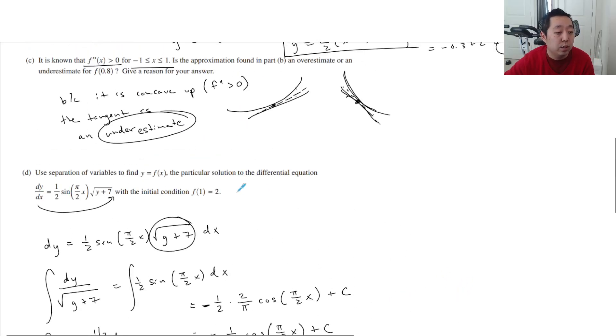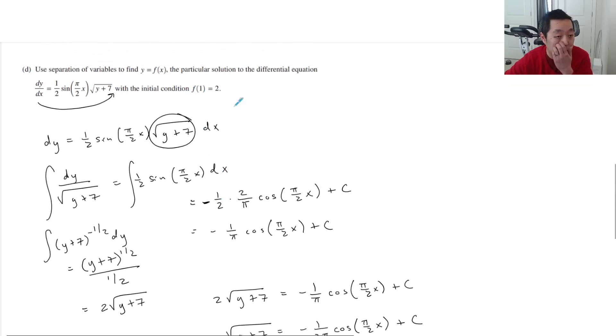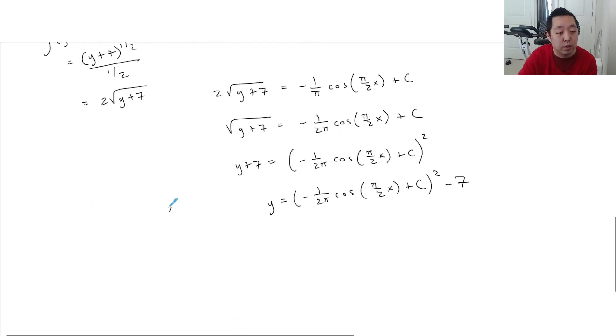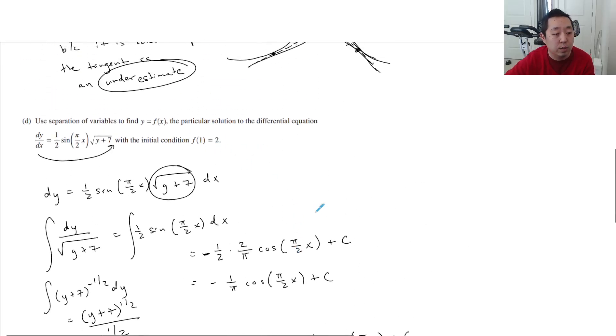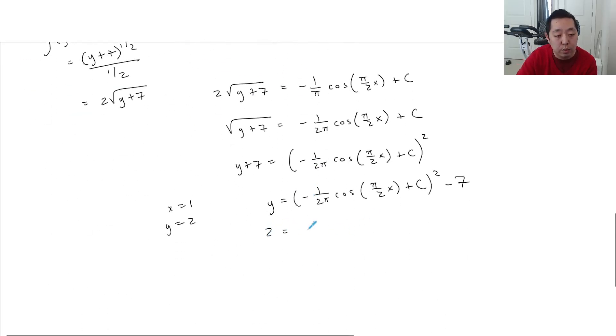Now, what do I have to do is I have to use the initial condition f of 1 equals 2 to find this value of c. So when x is 1, y is 2, basically. I did that right? f of 1 is 2. Yeah, x is 1, y is 2. So that means 2 equals negative 1 over 2 pi, cosine, cosine of pi over 2, plus c squared minus 7. So this is going to be 2 is equal, cosine of pi over 2 is just 0. So that's c squared minus 7. So 9 equals c squared. So c is going to equal 3.